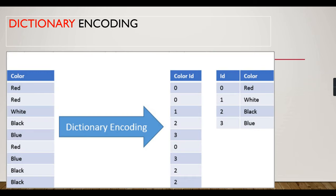One compression technique used is dictionary encoding. For example, if you have a color column in your table, instead of storing 'red, red, red, red,' it creates an index for each distinct value. For each column, it creates a dictionary — like 0, 1, 2, 3 as IDs. Data is stored in RAM using those IDs, not the full values, so storage is much smaller.